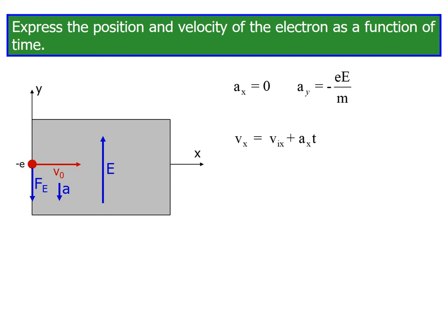Velocity: vx equals vix plus ax t. vy equals ay t, which equals minus eE over m times t.